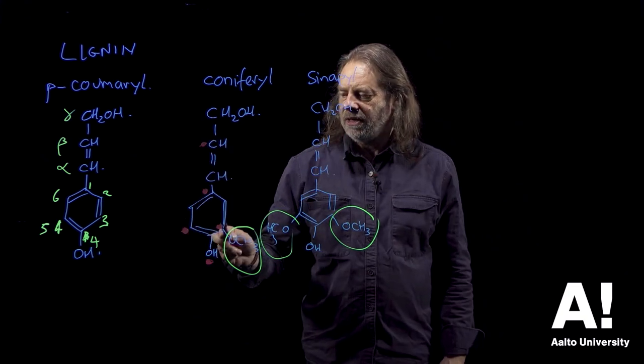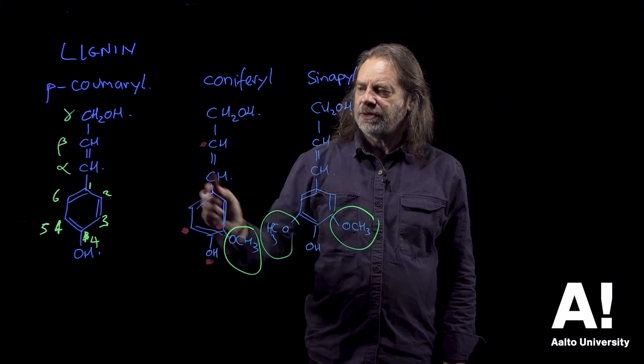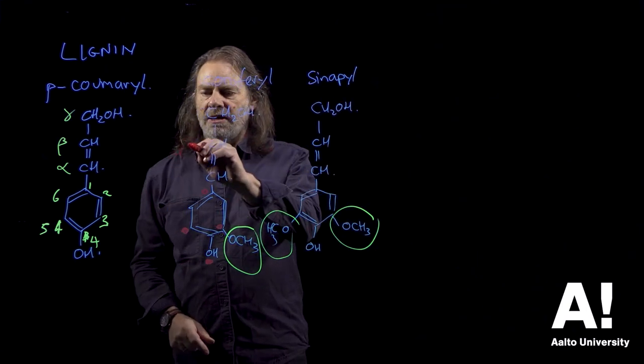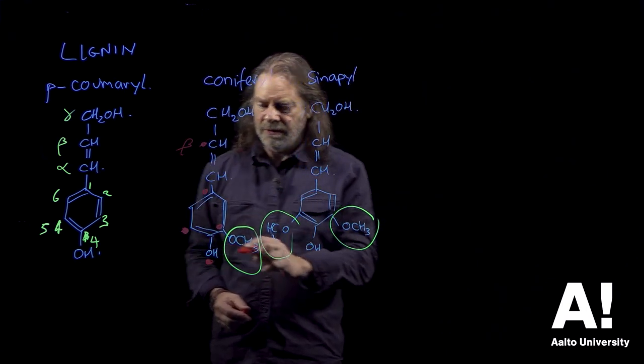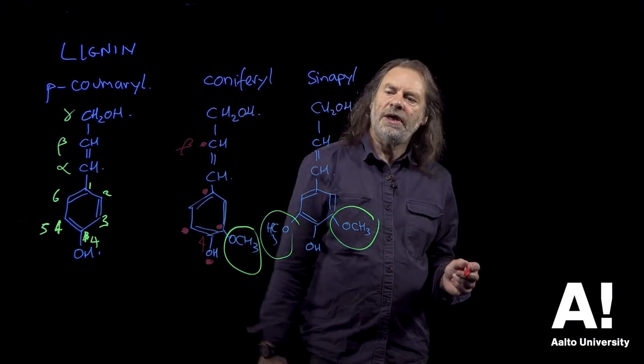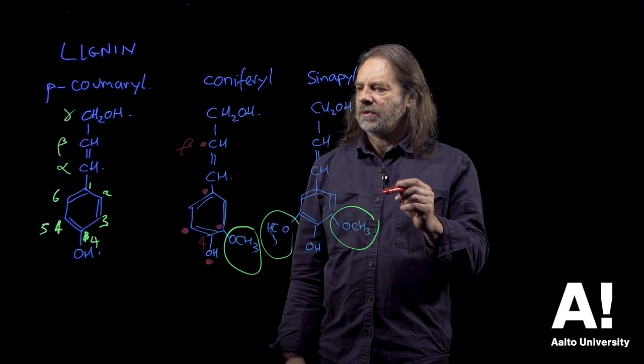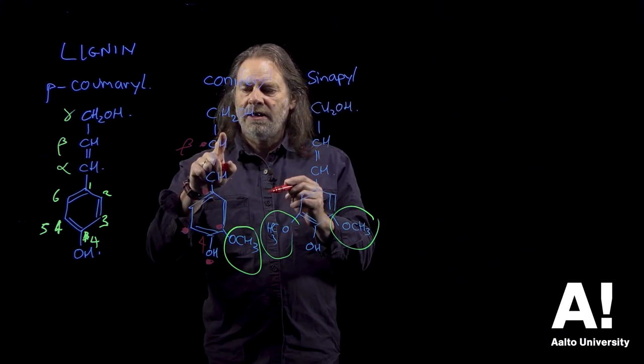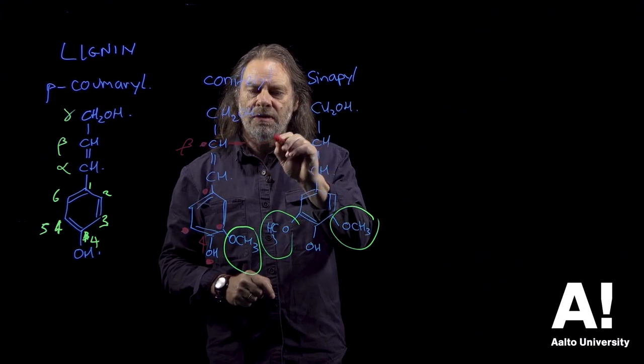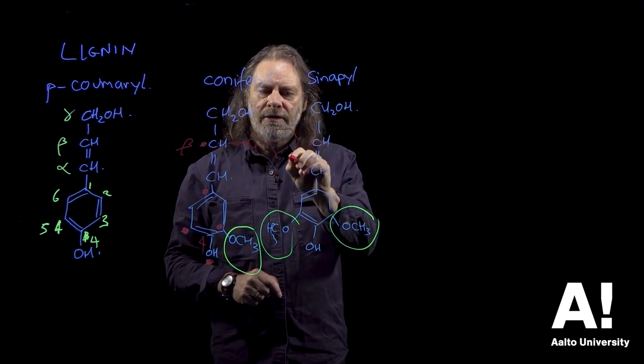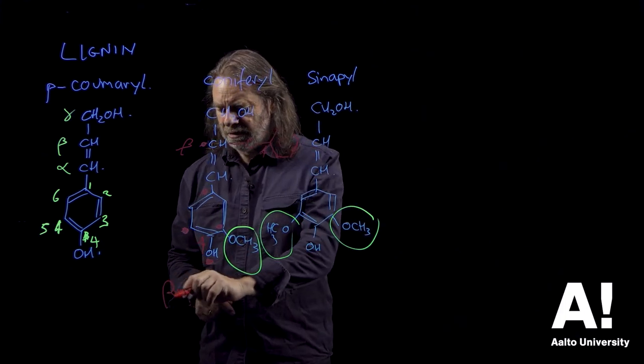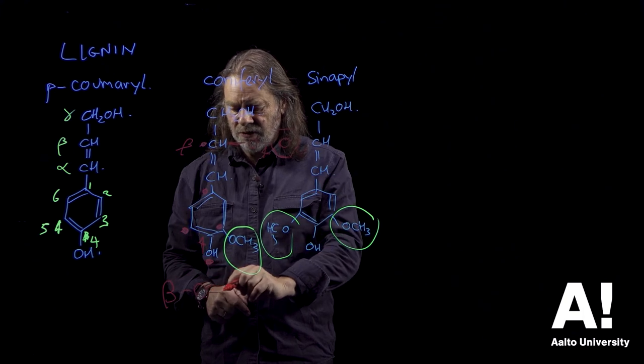These ones here, these are bonding positions. That's a bonding position and that's a bonding position. So that is the beta position and that's the number four position. And the most common bond that you get in lignin, if I was to draw here, a bond here to another molecule, it would look like that. And that's the four position. That is called a beta-O-4 bond.